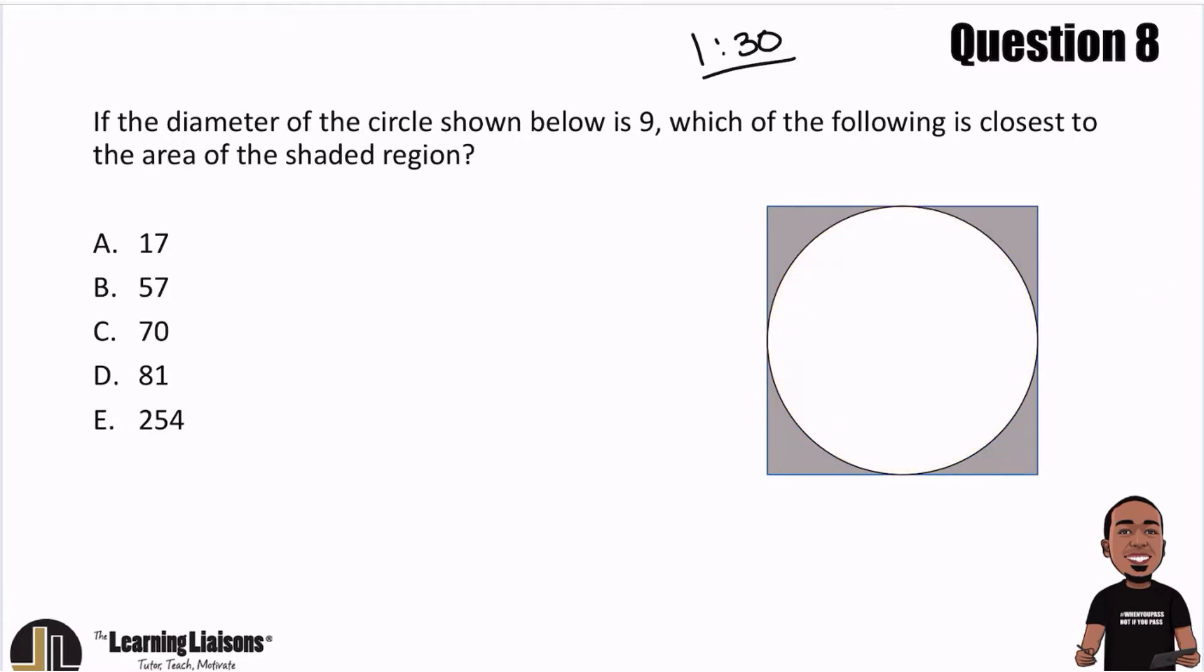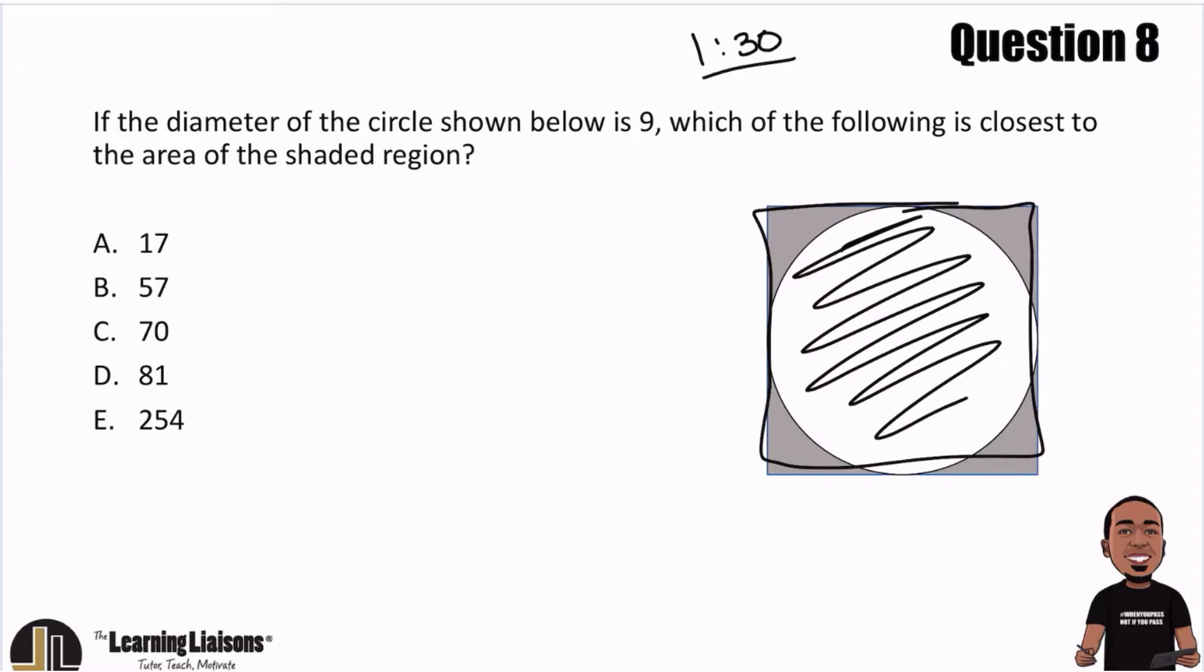So one more time, if I had the area of the whole square here, whatever that is, and I subtracted that area of the circle, we'll get the area of that shaded region.